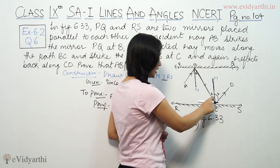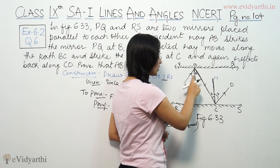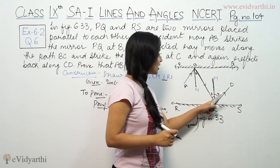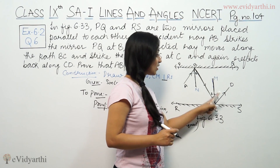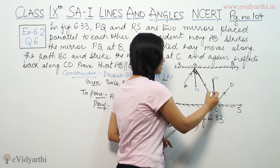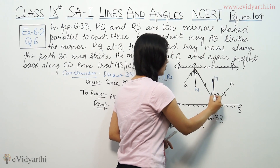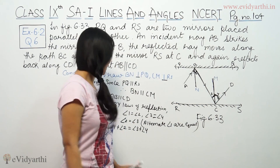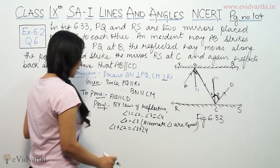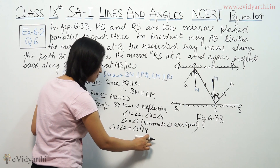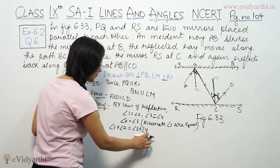If angle 2 is equal to angle 3, then angle 1 is equal to angle 3. And if angle 3 is equal to angle 4, then angle 1 is equal to angle 4. So the whole sum angle 1 plus angle 2 is equal to angle 3 plus angle 4.